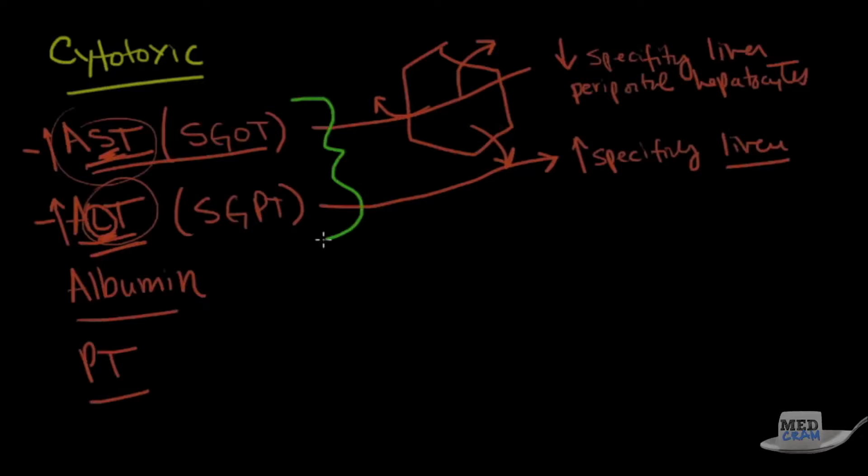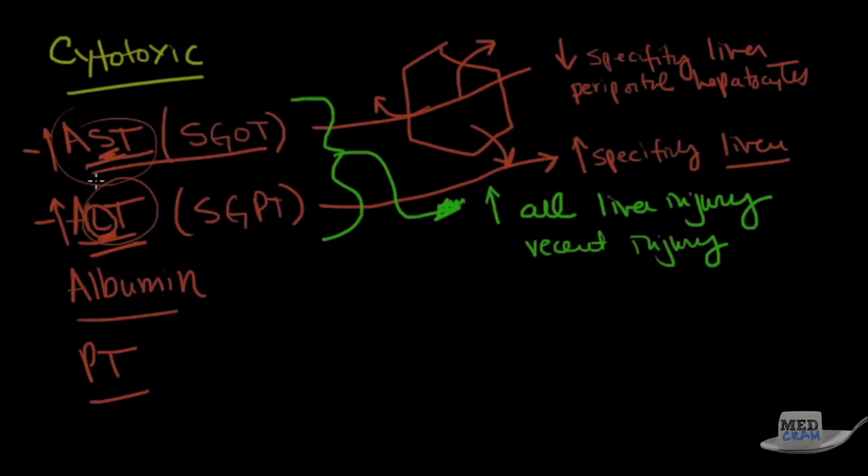Now, in terms of both of these, the AST and the ALT, they both go up in all forms of liver injury. It's only good for recent injury. So if there's old injury, you won't see these elevated. These tell you nothing about residual function. So if these are low, it doesn't mean that your liver function is low. It just means there's no current inflammation going on in the liver. It doesn't tell me if my liver is good and productive or if my liver is damaged and not functioning well.